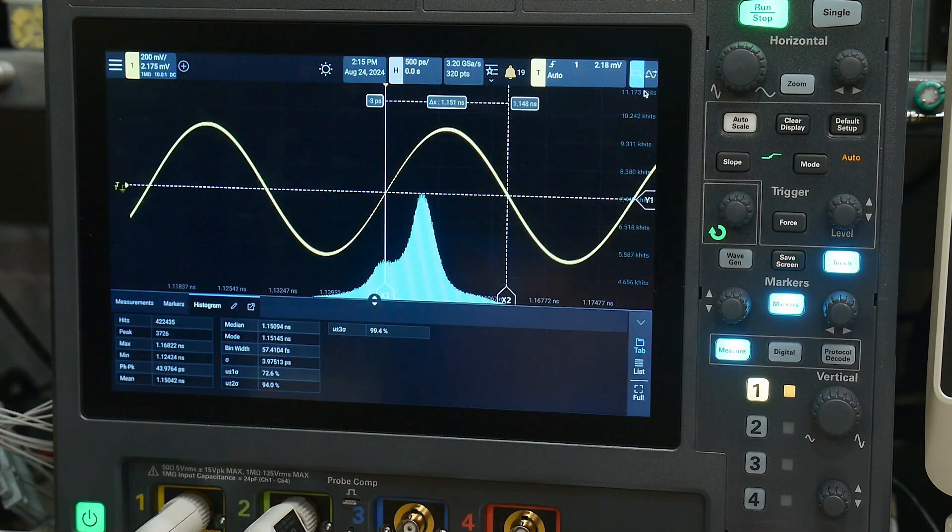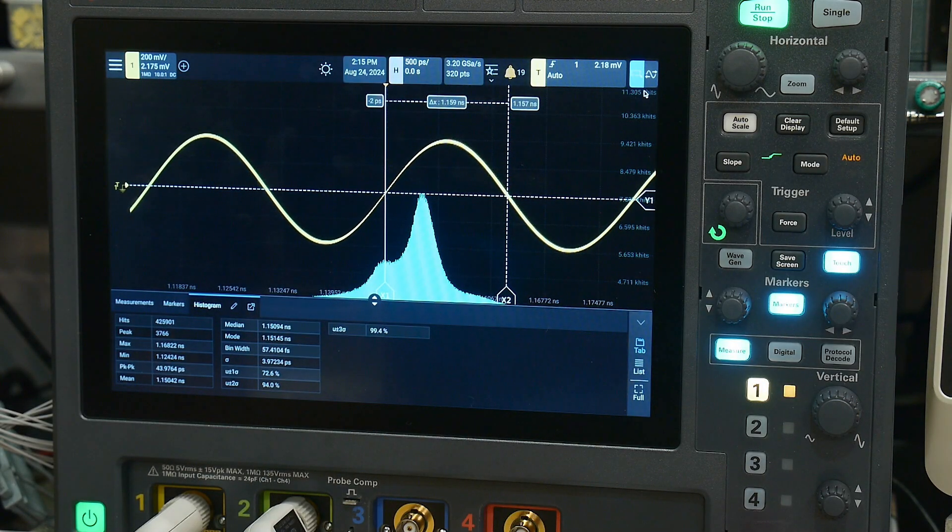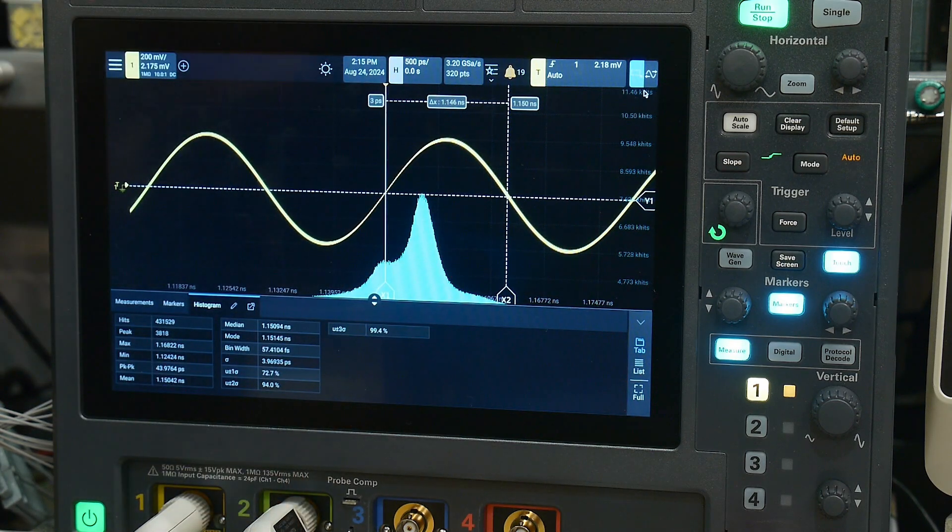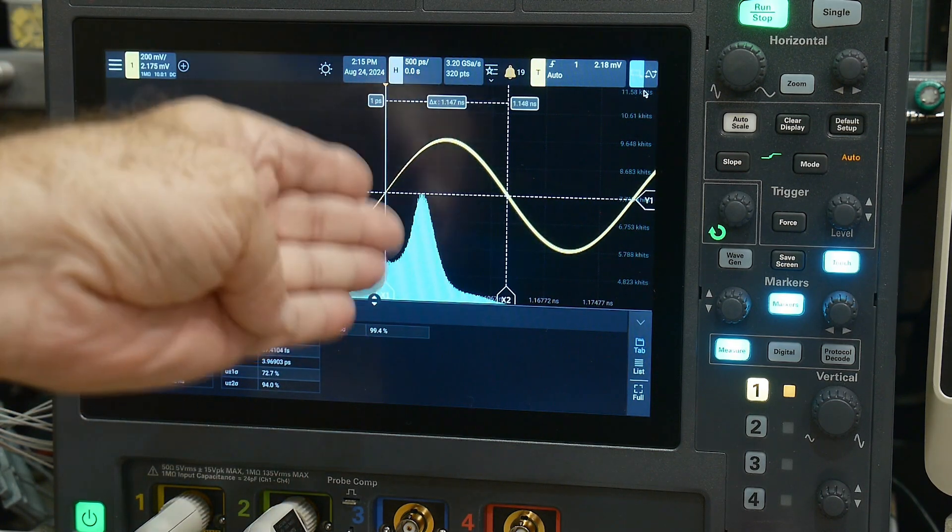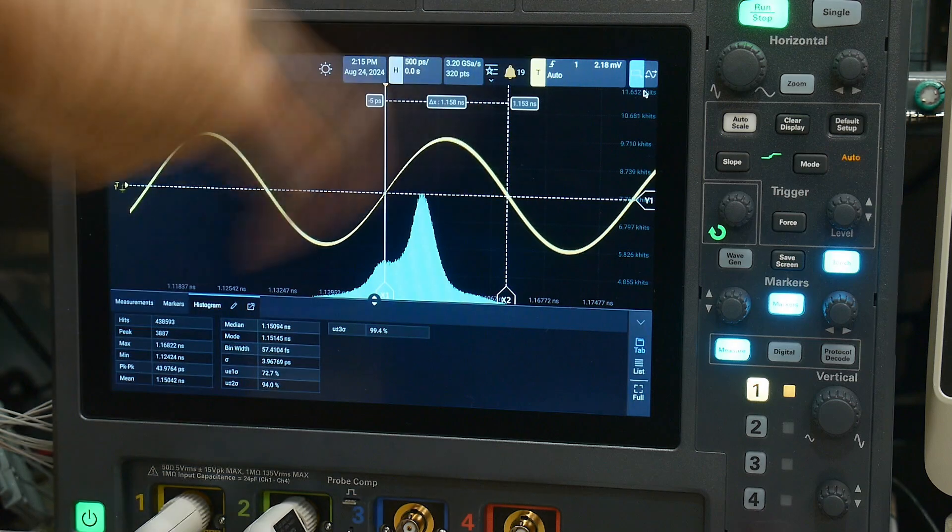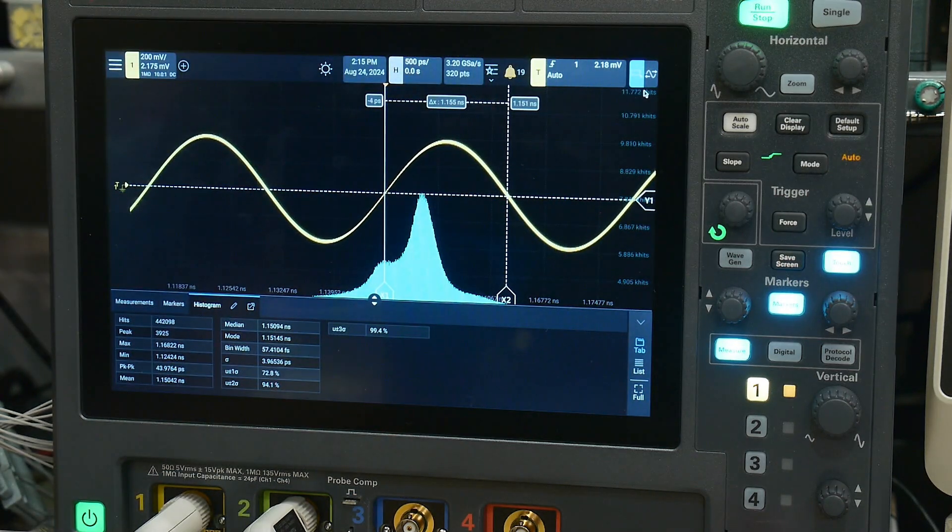So there's a steeper distribution on this side. So the oscillation mode really kind of has a hard limit in this direction, a softer limit in the lower direction. Anyway, there you go.